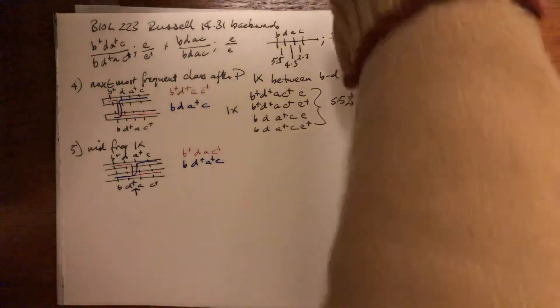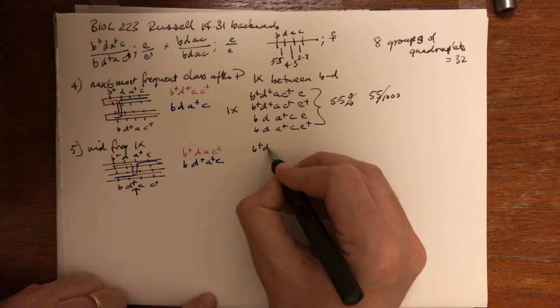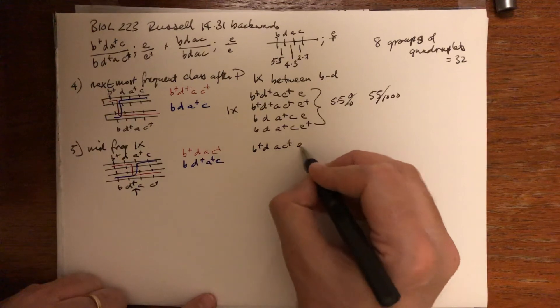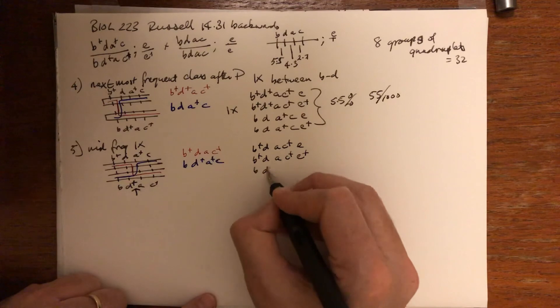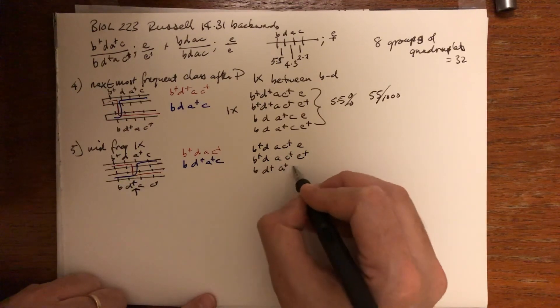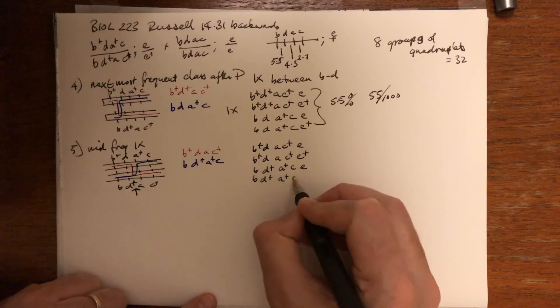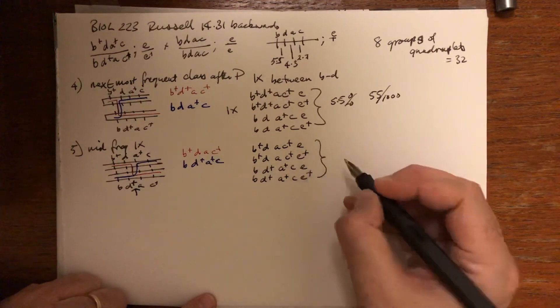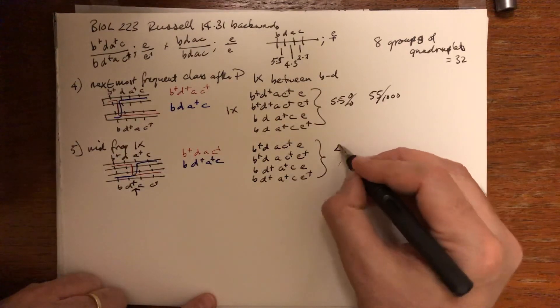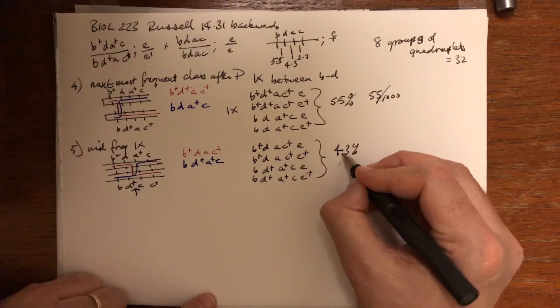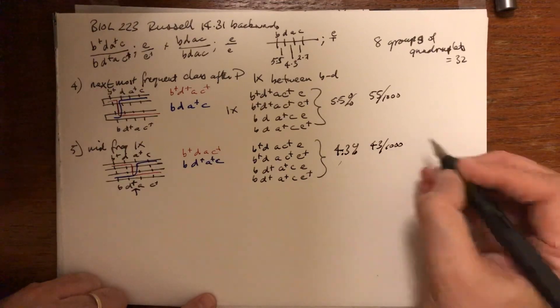The class here is going to generate the quadruplet that is B+ D A C+ E, B+ D A C+ E+, B D+ A+ C E, B D+ A+ C E+. Those together will sum to approximately 4.3, which will be 43 out of a thousand.